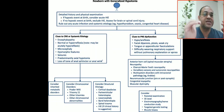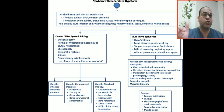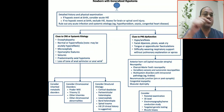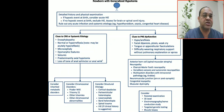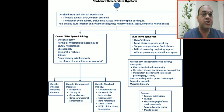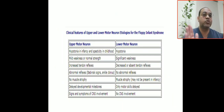Lower motor neuron lesions: anterior horn cell — spinal muscular atrophy; nerve — neuropathy; neuromuscular junction — myasthenia gravis; muscle — congenital myopathies or myotonia dystrophica. For investigation, request CK, examine the parents, perform muscle biopsy, and electromyography with nerve conduction velocity studies.